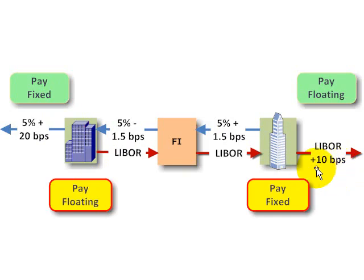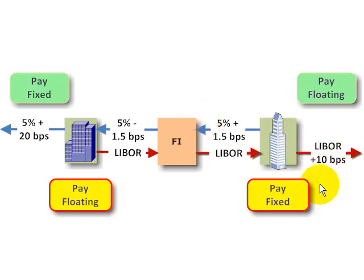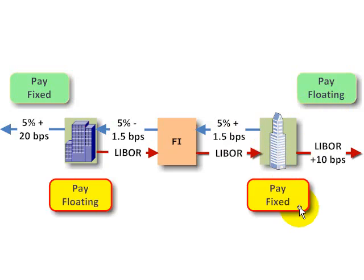Company B is in the inverse situation. Before the swap, they had this loan tied to LIBOR. After the swap, the LIBOR that's received almost entirely matches the LIBOR loan, just minus the 10 basis points. So their net obligation after the swap is now 5% plus 11 and a half basis points. They've converted a situation of paying a floating rate into a situation where their obligation is now to pay a fixed rate — 5% plus 11 and a half basis points.